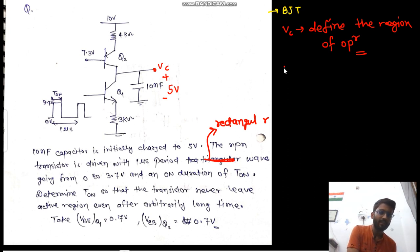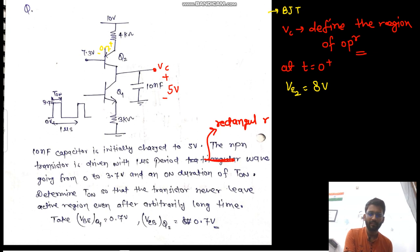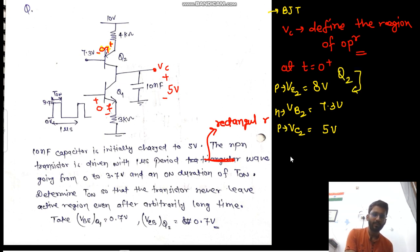So first we will talk about at t equals to 0 plus — what is happening. Your VE2 is at 8V, because this is 0.7 and this is 0.7. Your VE2 is at 8V, VB2 is at 7.3V, and VC2 is at 5V. This is a PNP transistor — Q2 is PNP and Q1 is NPN.